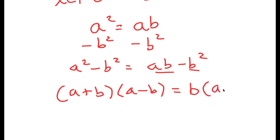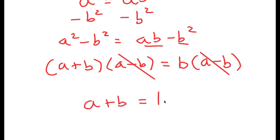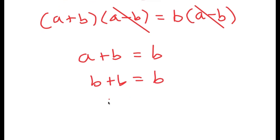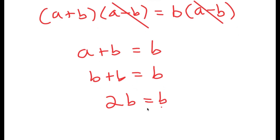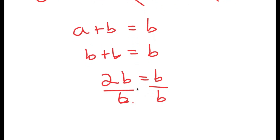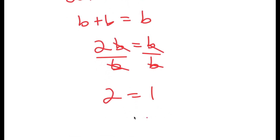So I get b times a minus b. Notice how I have a minus b on both sides, so I simply cancel these out to get a plus b is equal to b. Remember how a is equal to b, so I get b plus b is equal to b. That's 2b is equal to b, and if I divide both sides by b, I get 2 is equal to 1.